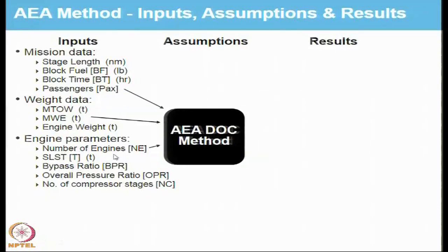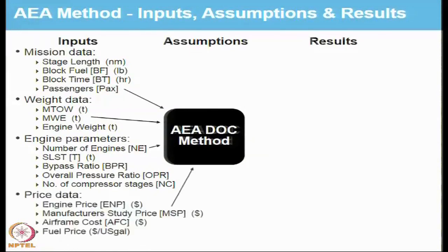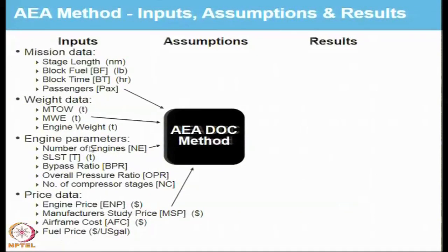These engine parameters are used to get a handle on the cost of engine maintenance. Then you have the price data: the price of the engine, and the manufacturer study price, or MSP, which basically stands for the price the airline has incurred in procuring the aircraft. There is an airframe cost which is the cost of the hull to be insured, and then there is a fuel price per gallon. So the inputs to the AEA DOC method are the mission data, weight data, engine data, and price data.